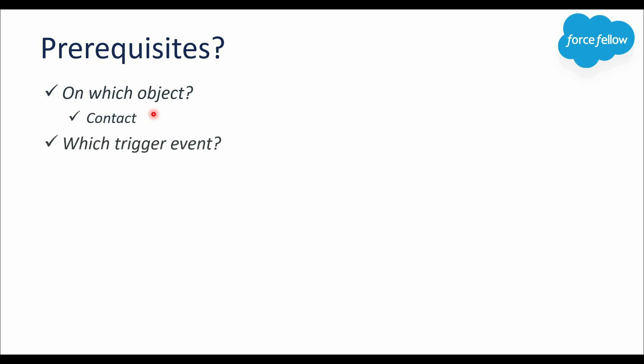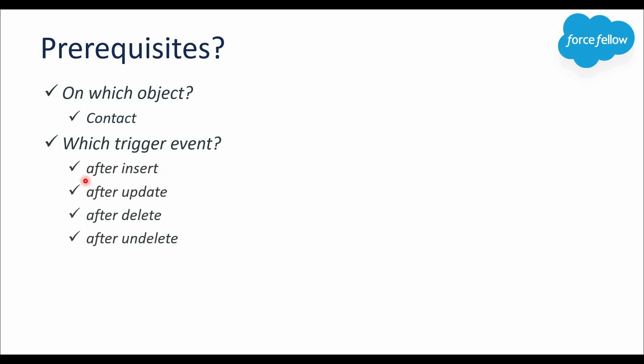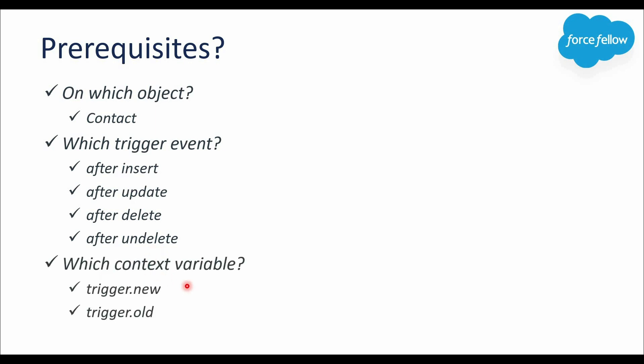Next, which trigger events will we use? As discussed, association can change on four actions: insert, update, delete, and undelete. Since we need to calculate and update data in a parent record — a related record — and you know if you want to update fields in related records you have to write logic in after triggers. So the trigger events will be: After Insert, After Update, After Delete, and After Undelete.